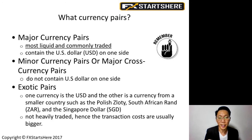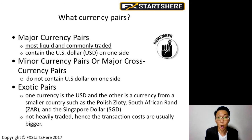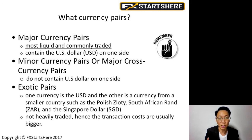Minor currency pairs, or major cross-currency pairs, do not contain the U.S. dollar on one side. For example, euro against Japanese yen — that is a major currency pair, but there is no U.S. dollar, so they call it a major cross-currency pair. Exotic pairs have one currency that is the U.S. dollar and another currency from a smaller country, such as the Polish Zloty, South African Rand, or Singapore dollar. They are not heavily traded, hence the transaction costs — the spread — are usually bigger. We'll cover the spread in a later lesson.